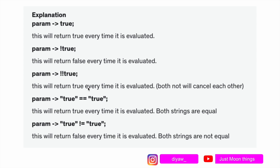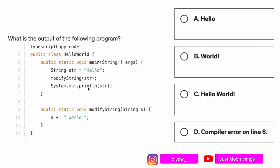The next question asks: what is the output of the following program? We have a program here and we are trying to figure out what the output will be. We have public class HelloWorld, then the main method, then a string variable named str with value 'hello'. We pass it to a method called modifyString and then try to print the new string.